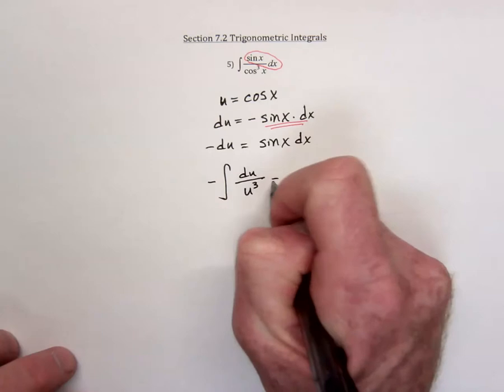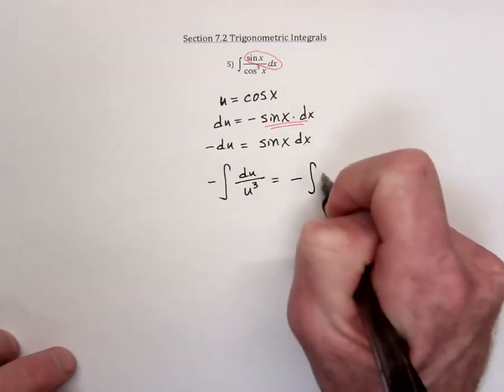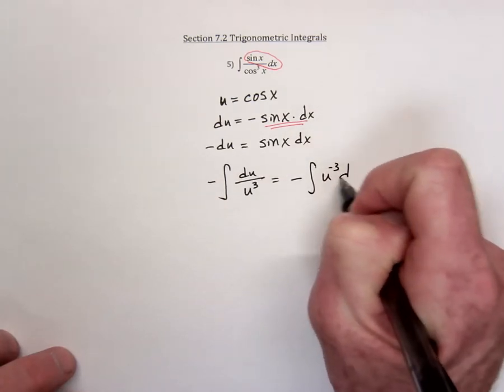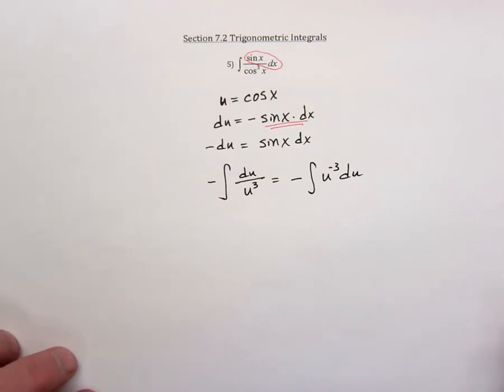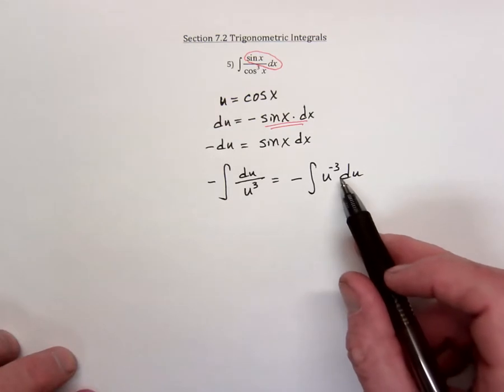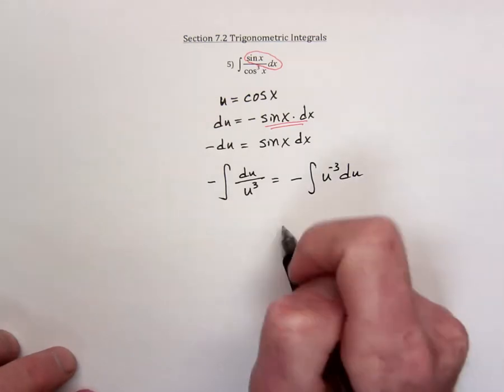And then if we just rewrite this as integrating u to the negative 3, then you can use the power rule for integration. Add 1 to the exponent, that's going to become u to the negative 2, and then divide by that number.